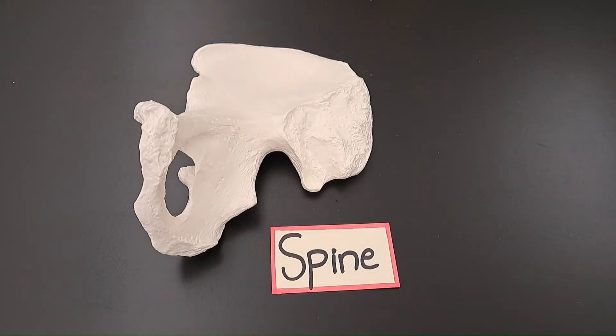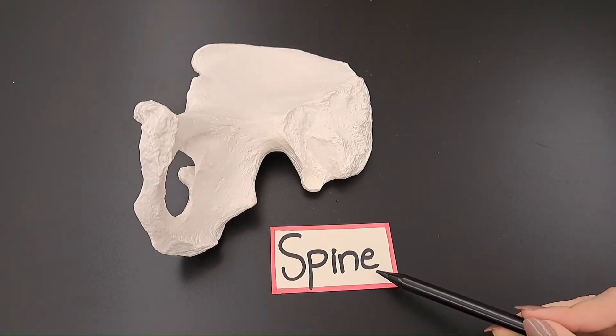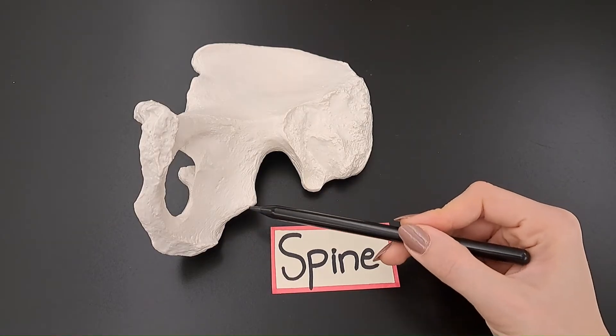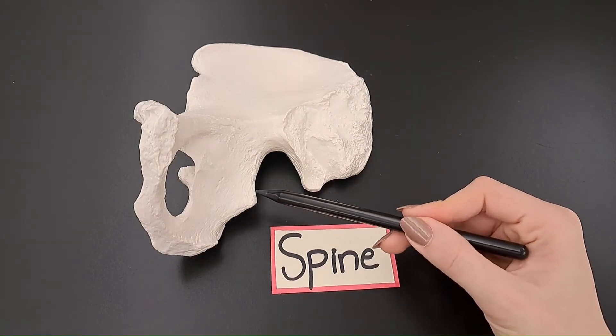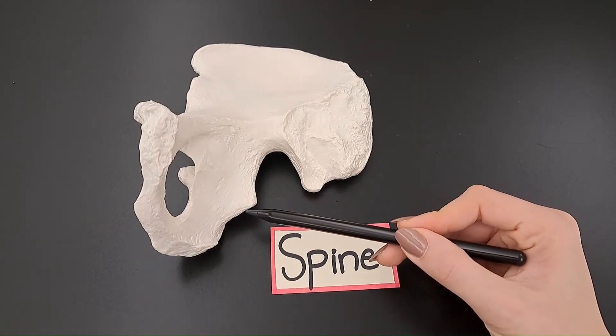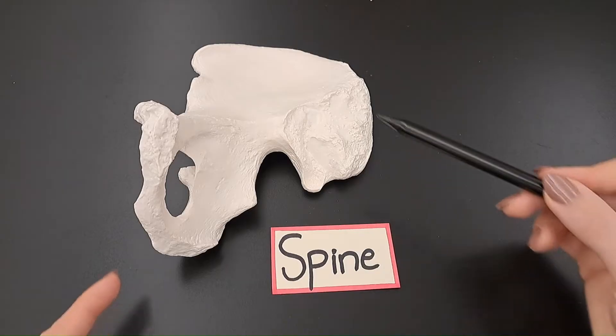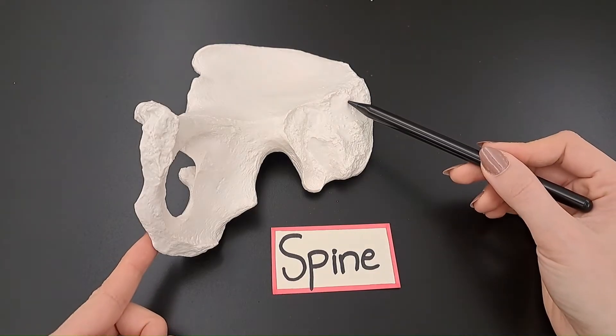Moving to the second projection, a spine, which is a sharp, pointed projection. An example is the ischial spine on the hip bone.